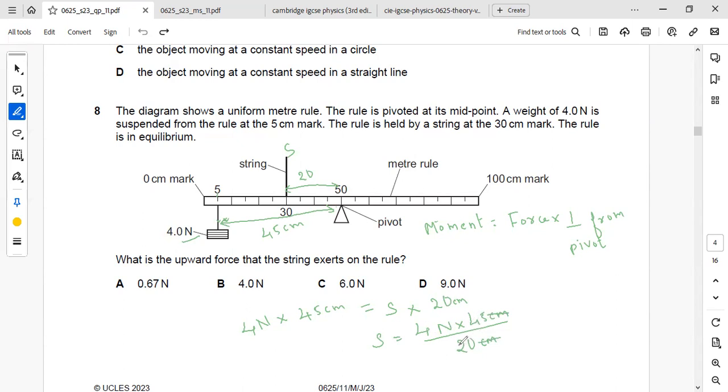While dividing, we will be getting the answer as 4.5 into 2 Newton, that is 9 Newton. So the answer is B, 9 Newton.